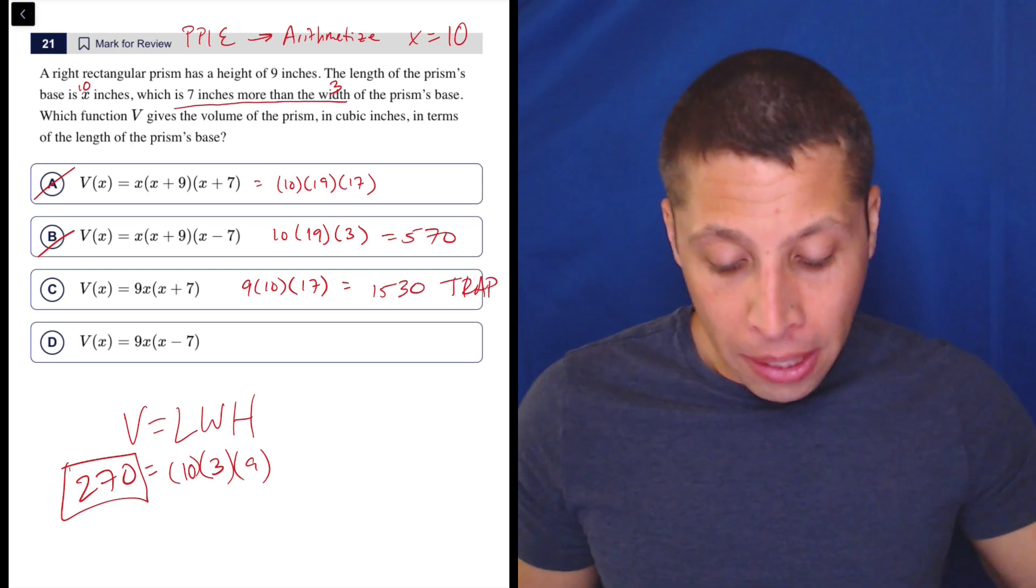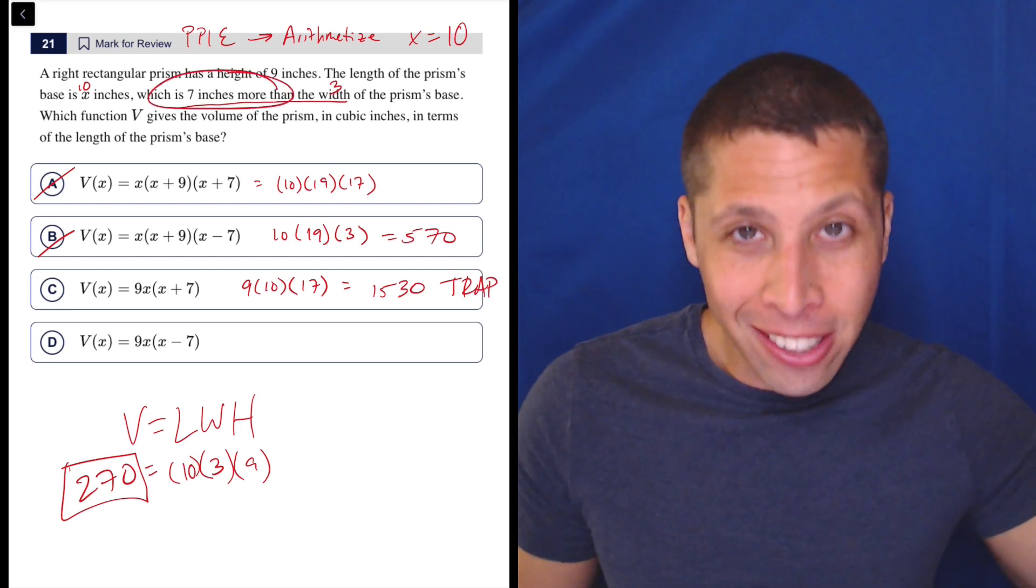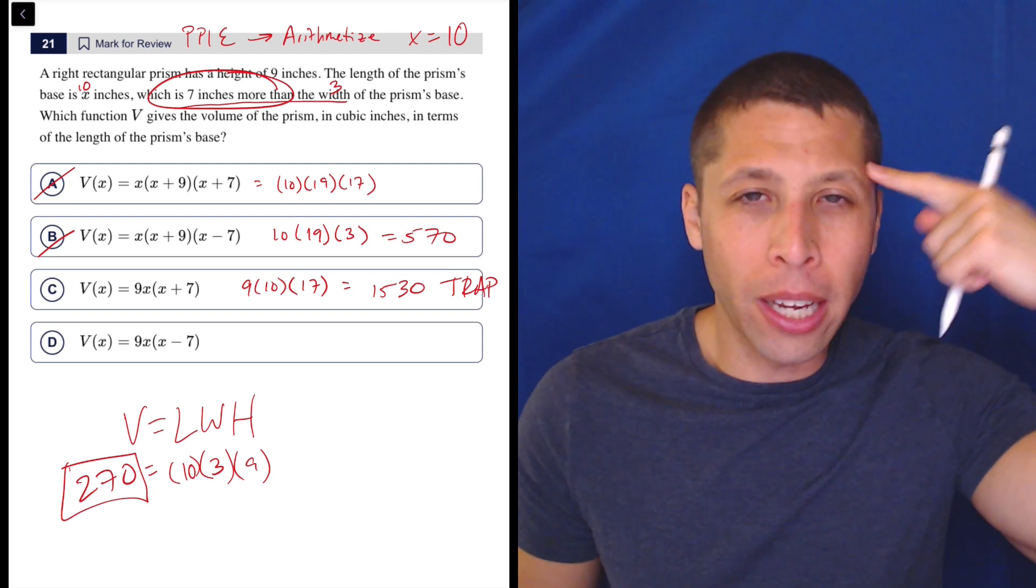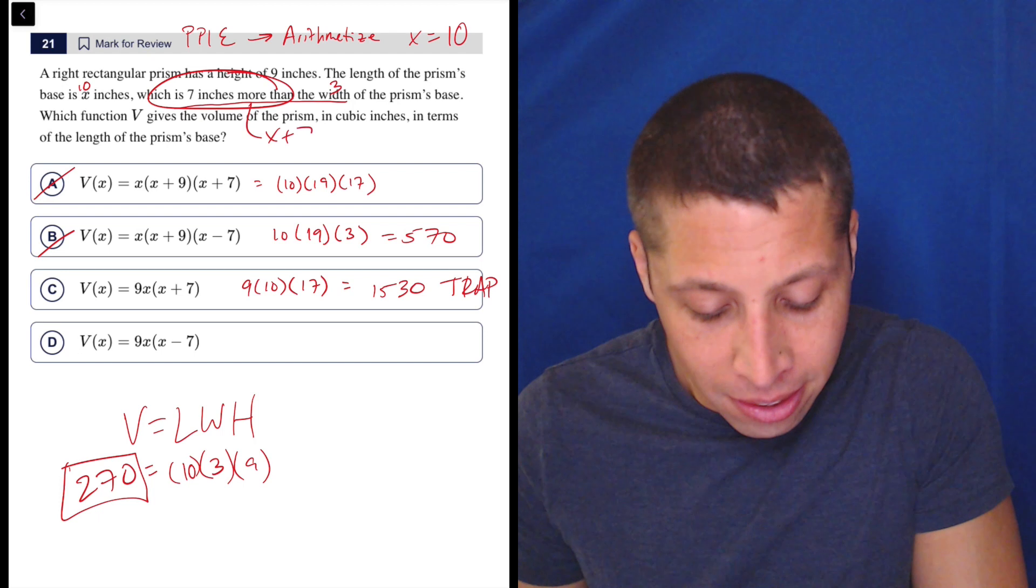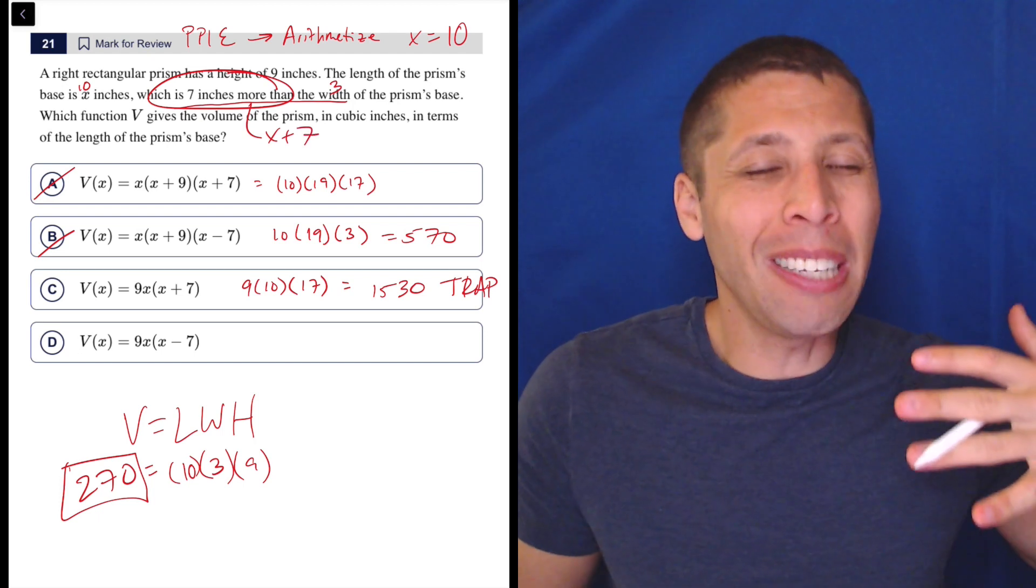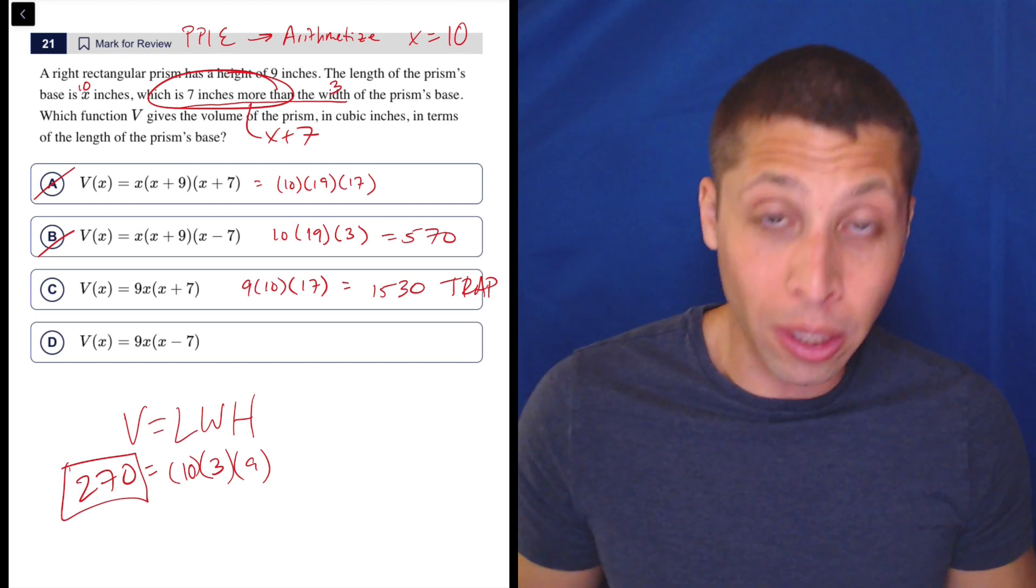That's what they hope you pick. Because they know when you read this part that the X is seven inches more than the width. They know you're going to be like, okay, I got to do X plus seven somewhere, right? And if you're not really thinking about it deeply and you're not proving it, then choice C becomes really, really tempting.